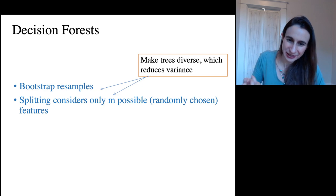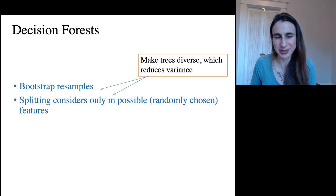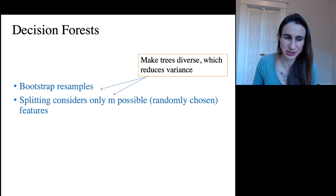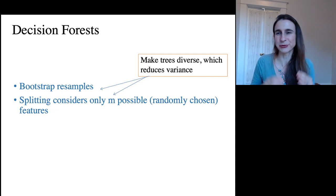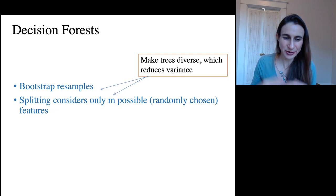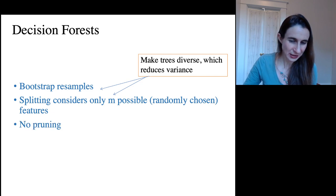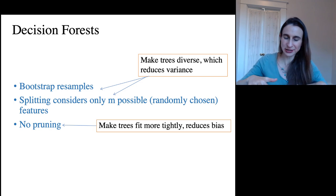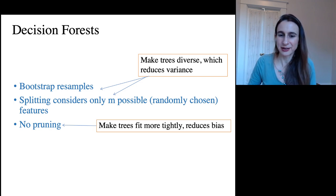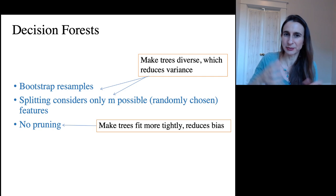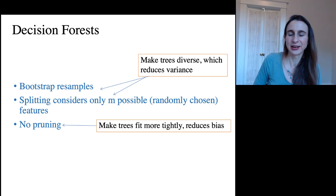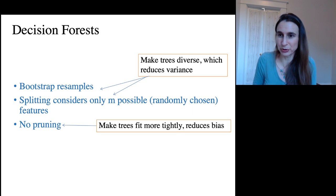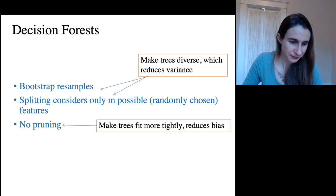So the nice things about the key ideas here are that you're using the bootstrap samples to make sure these trees are different from each other. And then also within each tree, you're restricting which features the tree can use, and so that also makes each of these trees different from the others. And there's no pruning, which makes the trees fit the data more tightly. And this reduces bias, right, because you can actually fit the data really well. And so even if there's something kooky in the data, all of these trees might find that thing, and then you'd make correct predictions in that area of the space.